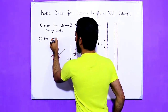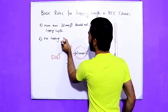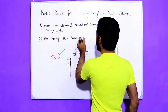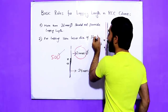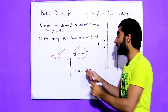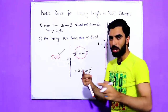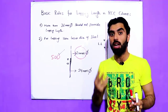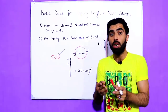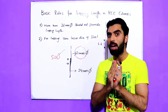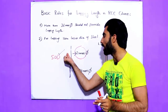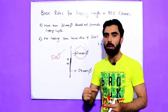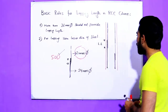For lapping length, always take the lesser diameter of the steel bar. If there are two different diameters, take the smaller one — the top bar being overlapped. If both bars have the same diameter, for example both are 20mm, then you simply use that diameter. This is the second rule.